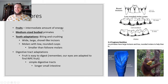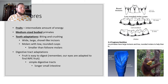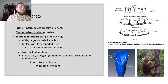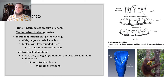Frugivores eat fruit, which provides an intermediate amount of energy, and these are medium-sized primates — they can be bigger like orangutans, but orangutans still aren't as big as a gorilla. Their tooth adaptations are for biting and crushing: wide, large, shovel-like incisors and molars with low rounded cusps, which are smaller than folivore molars. Their digestive tract is simple with a long small intestine because fruit is easy to digest and they don't need to break down complex fibrous leaves. Here we see the low rounded molar cusps, the broad incisors, and an orangutan eating bananas.